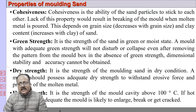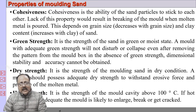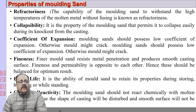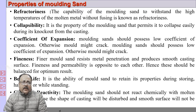Green strength is the strength of the sand in its moist condition. Dry strength is the strength of the molding sand in dry condition — when molten metal is poured, moisture evaporates and the sand becomes dry; its strength at that state is dry strength. Above 100°C, the strength of the sand is called hot strength. Refractoriness is the ability of molding sand to withstand the very high temperature of the molten metal; the higher the refractoriness, the better.